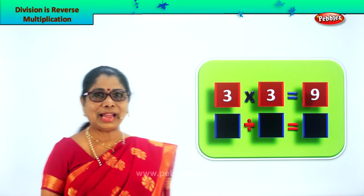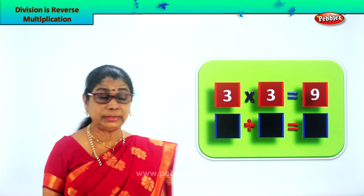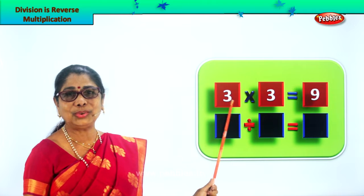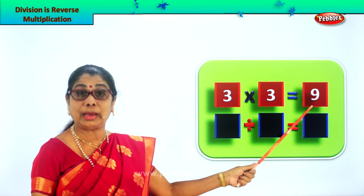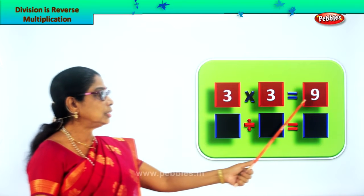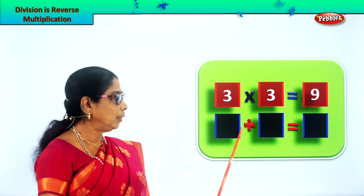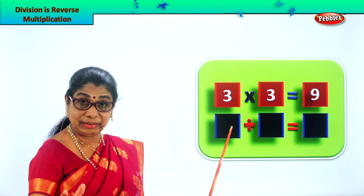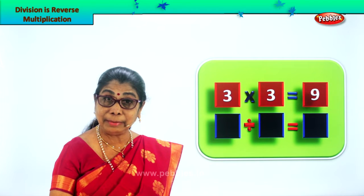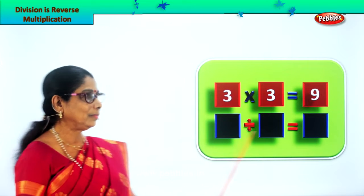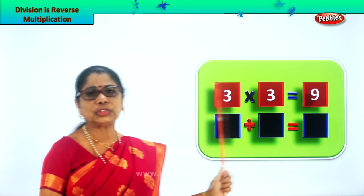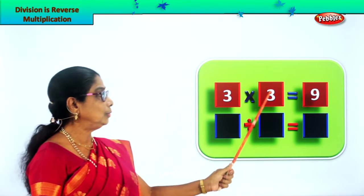Here we are. Look how colourful it is. Now you know your tables. Three into three — three threes are what? Nine. You know the three times table? Three into three is equal to nine. Now what are we doing today? Division is reverse multiplication. So supposing we have nine here. We have nine and we have to divide nine.